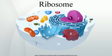Ribosomes were first observed in the mid-1950s by Romanian cell biologist George Emil Palade using an electron microscope as dense particles or granules, for which, in 1974, he would win a Nobel Prize. The term ribosome was proposed by scientist Richard B. Roberts in 1958.